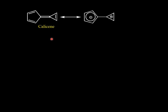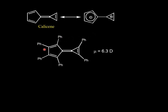Coming to calicene, where the 5-membered ring is connected to the 3-membered ring through a carbon-carbon double bond, it is found to be a stable compound due to the major contribution of the dipolar resonance structure. Both rings — the 5-membered as well as the 3-membered — have aromatic character obeying Hückel's rule. In fact, the phenyl-substituted analog of calicene is found to be stable with a large dipole moment of 6.3 Debye.